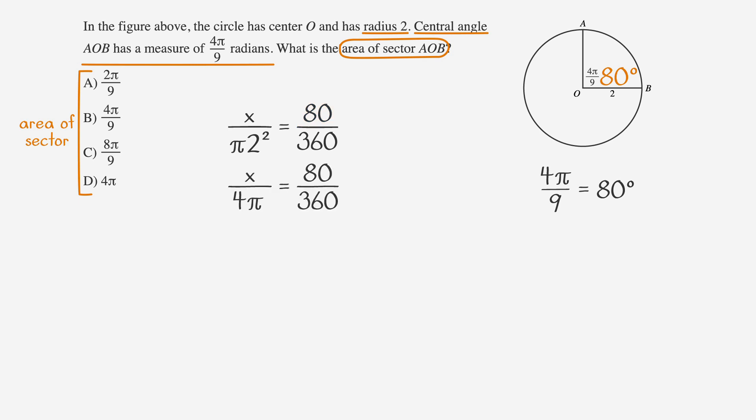First, 2 squared is 4, and we can reduce 80 over 360 to 8 over 36. 4 divides evenly into both 8 and 36, so we can actually reduce that down a little further to 2 over 9.